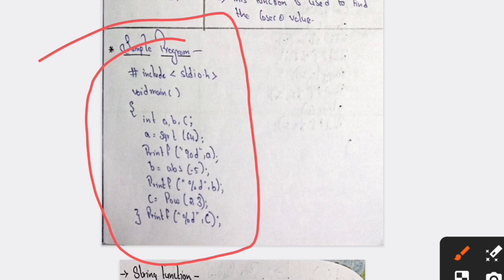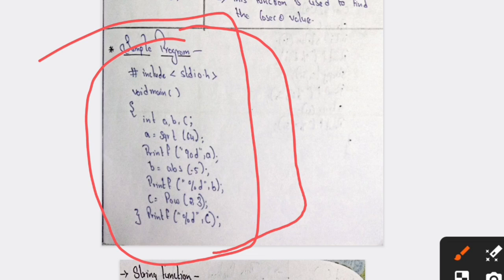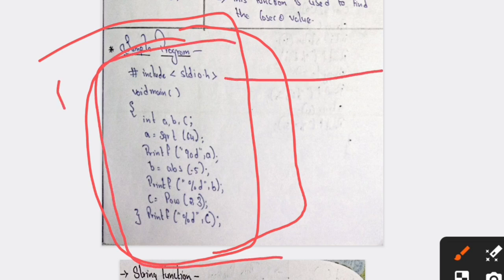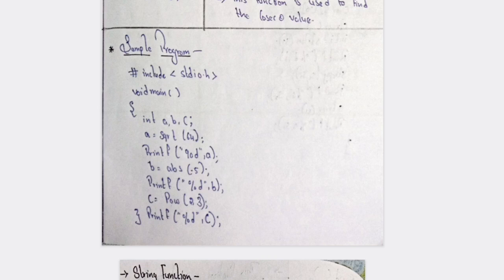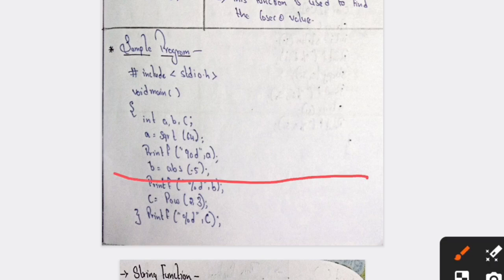In built-in functions there are four types: mathematical, date and time, character, and string. For the sample program, remember this structure — include, void main — and only this part is changing; the remaining program is the same as what you learned in the first and second chapters. It's basically copy-paste with one line changing.